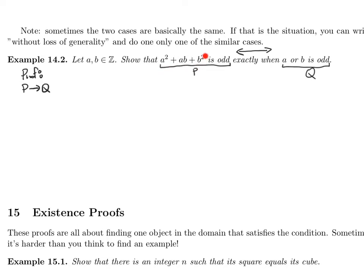Assuming this expression is odd and showing that at least one of a or b is odd might be hard to do directly, so what I'm going to do is prove the contrapositive. So I'm going to prove not-q implies not-p. This is by contrapositive.